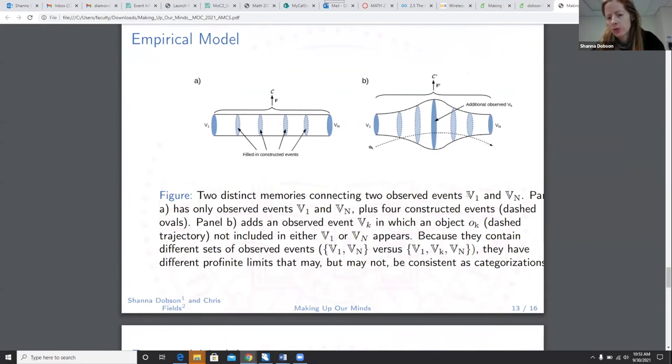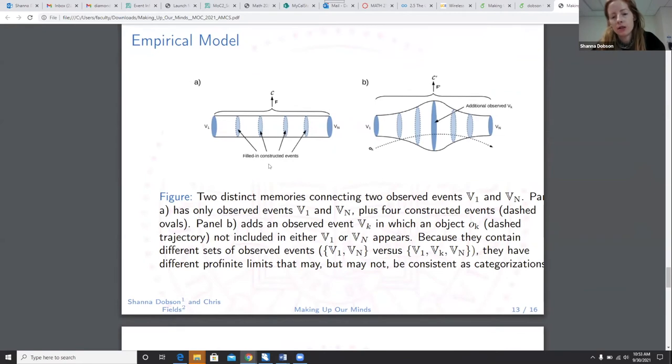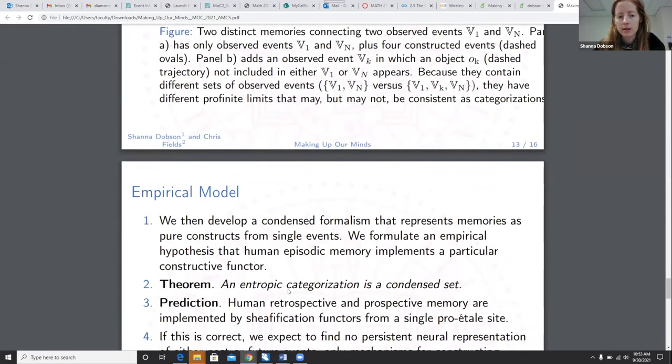So in our empirical model, we use the sheaf-theoretic technique to render this event-dependent time functorial. We're going to construct these memories as sequences of observed and constructed events with well-defined limits. We're going to maximize the consistency of categorizations that are assigned to objects. So we have two events joined by shared categorizations, and T1-2 is the induced time morphism. So in this figure, sorry about the panel. I still couldn't figure that out, Chris. I know, yeah. Math genius can't figure this thing out. Two distinct memories connecting two observed events, V-1 and V-N, plus four constructed events, which are these dashed ovals. Panel B adds an observed event, V-K, in which an object, O-K, not included in either V-1 or V-N appears. This is some sort of interpolation. So because these sets contain different observed events, they have different pro-finite limits that may or may not be consistent as categorizations.